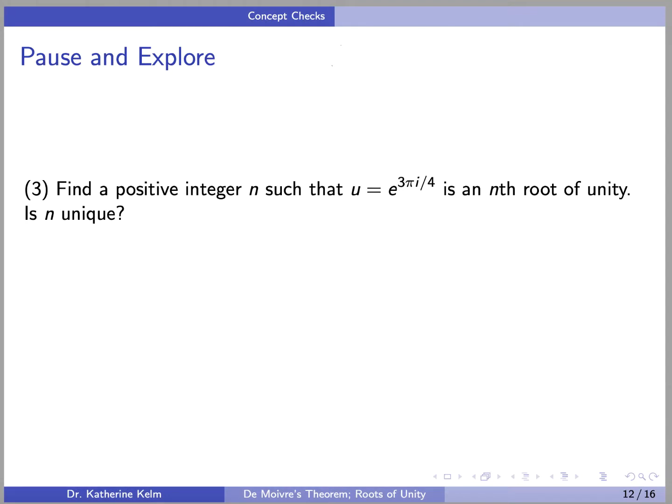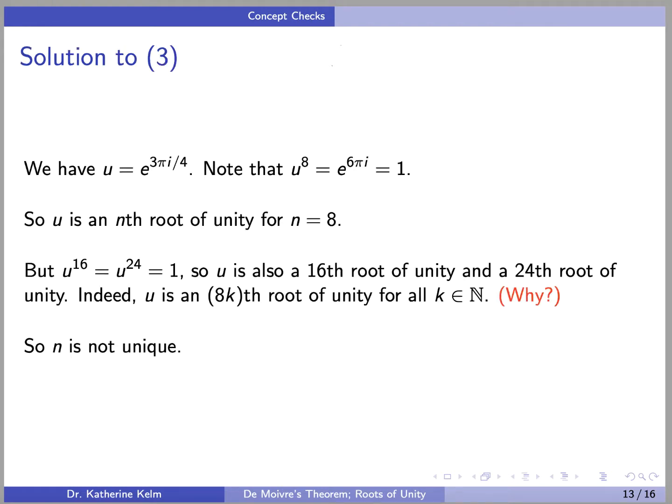Here is our last concept check: find a positive integer n such that u = e^(3πi/4) is an nth root of unity. Is n unique? u^8 = 1, so u is an 8th root of unity. But u^16 and u^24 are also equal to 1, so u is also a 16th and 24th root of unity. In fact, u is an 8k-th root of unity for all k, and n is definitely not unique. A proof appears on the next page.